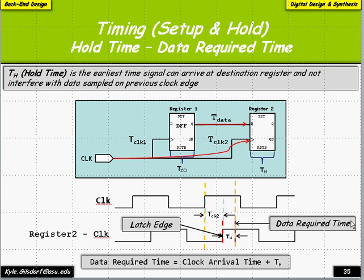We're going to continue talking about hold time and the data required time. This is the point at which the source flip-flop can start changing its output again — when we need to hold our signal stable. We don't know when we need to start, but we know when we need to hold until. That certain point is called the data required time, and it is basically the clock arrival time.